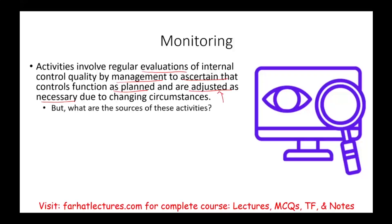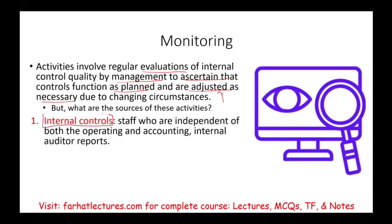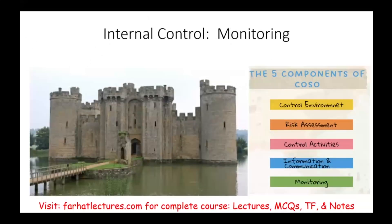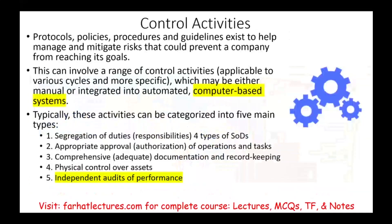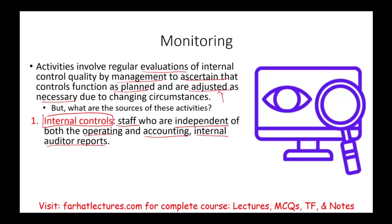The question becomes: how do we know? What are the sources of these activities? The first group that will help us is our internal control department — staff who are independent of both operating the business and accounting. These are called internal auditors. If you remember when we looked at the control environment, we said part of it is how seriously the board of directors takes into account the role of the internal auditors, because they play a critical role in making sure the company is running smoothly by following rules, regulations, laws, and not committing fraud.